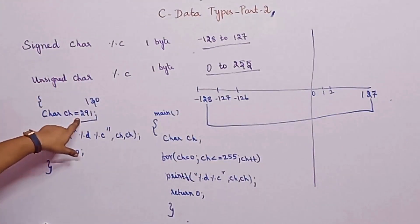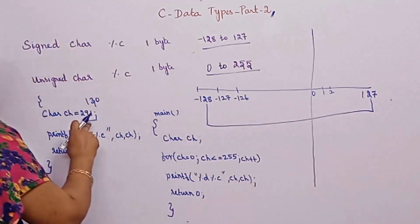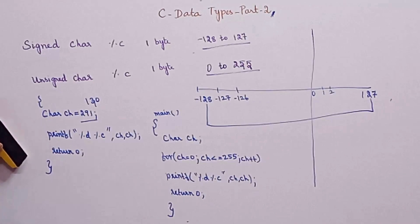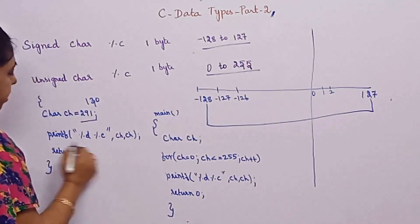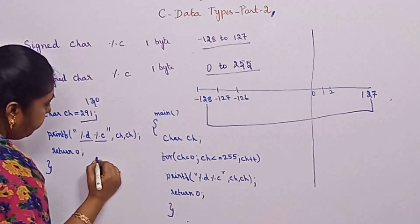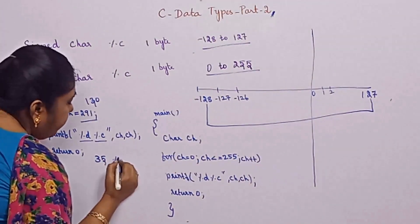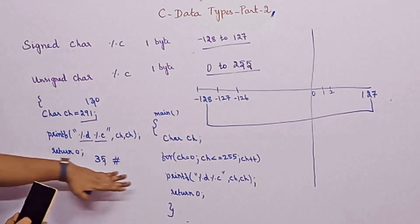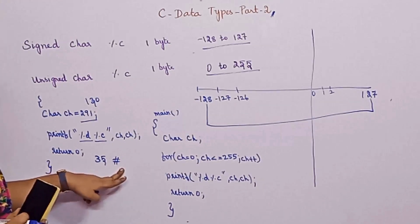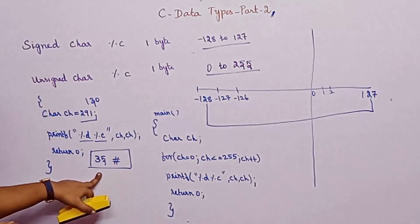For the value 291 — 291 does not exist within the signed character range, which only goes to 127. So what happens? It will just pick a random value, and that random value differs from laptop to laptop and from system to system. For 291, using %d and %c, it will pick a random value — for example 35 — and the character hash symbol will be printed, since the ASCII value for hash is 35. This output will differ for each system; you can check on your own.